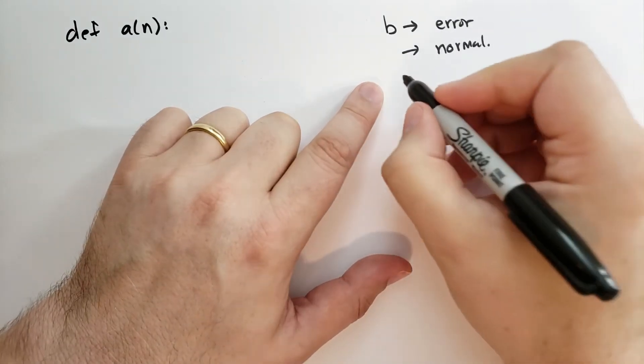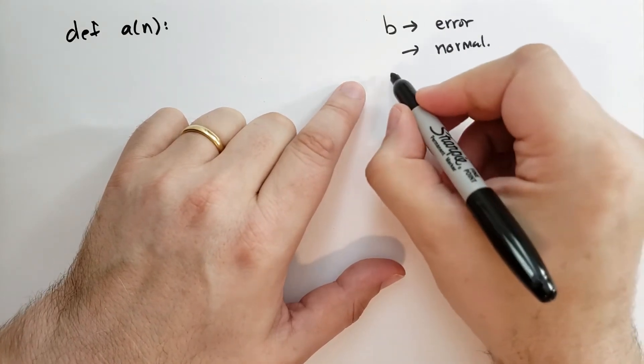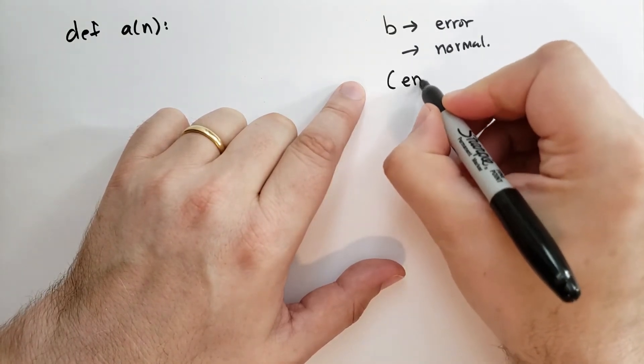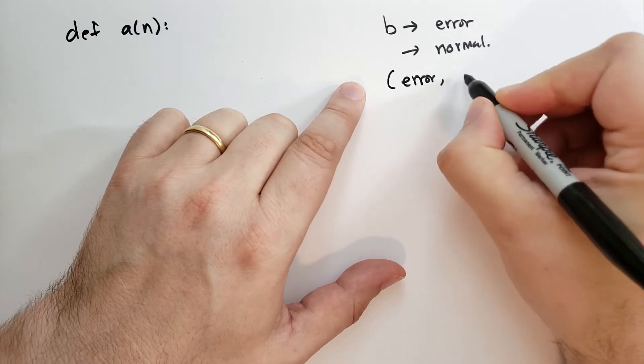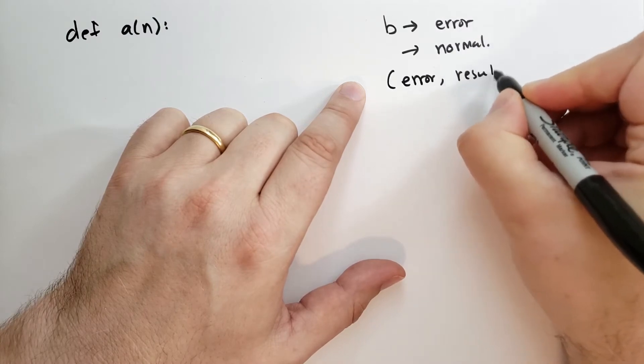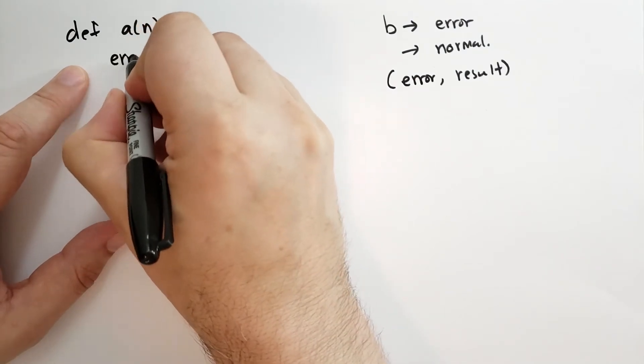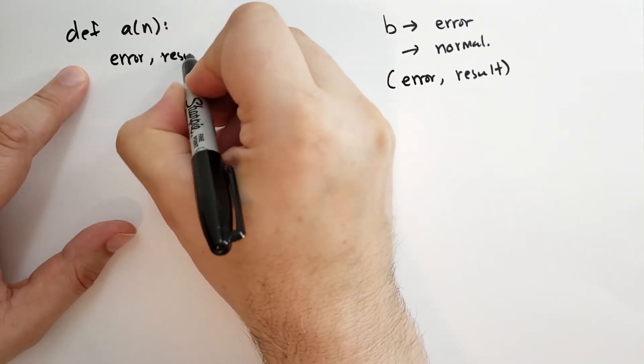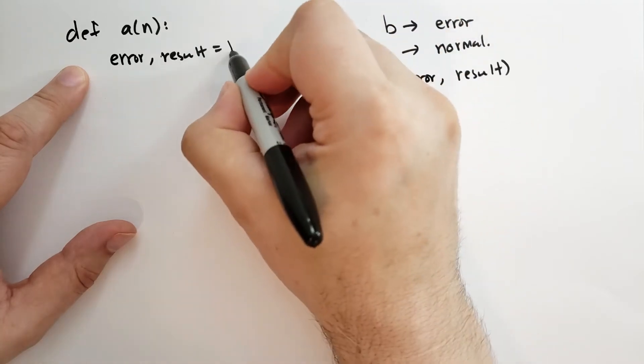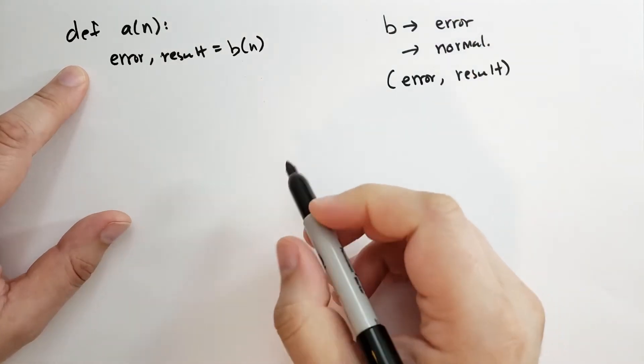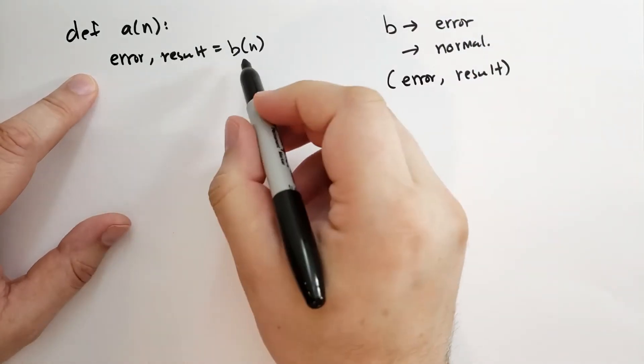In order to represent this, we're going to have the functions return a pair of values. The first value being the error, and the second value being the normal return value, the result. So a has to call b. So we have error comma result is equal to b of n.